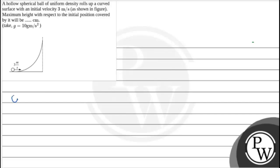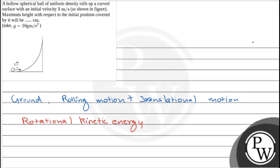when the ball was at ground, the ball was in rolling motion. So the rotational kinetic energy is equal to half I omega squared. Here,